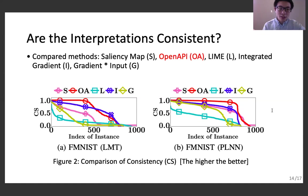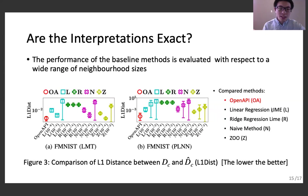In our fourth experiment, we show that OpenAPI can exactly compute the decision features of target models. We measure the exactness of an interpretation by the L1 distance between the computed decision features and the ground truth decision features. Because the baseline method relies on predefined neighborhood size, we evaluate them with respect to a wide range of neighborhood sizes. As shown in figure A and B, OpenAPI identifies exact decision features of the two target models, which achieves significantly better exactness performance than other methods.